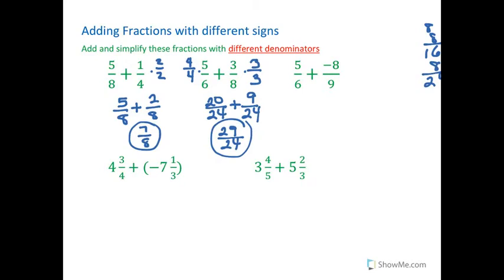Does 6 go into 9? No. So I'm going to take 9 and add 9 and get 18 and check again. Does 6 go into 18? Yes. So that's my magic number. Multiply this by 2 over 2. Multiply this by 3 over 3. And I'm going to get 15 over 18 plus a negative 16, our first negative, over 18. And 15 plus a negative 16 is negative 1 over 18. Always keep your denominator the same.